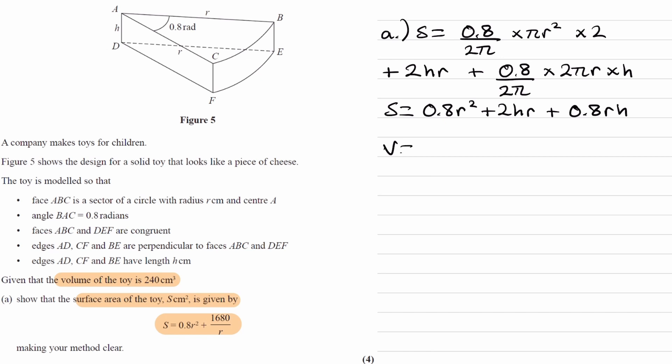So we know the volume of the toy is equal to 240. We can get an expression for the volume of the toy from the diagram. We would do the area of the sector multiplied by height. Area of the sector would be, we've worked this out before, it's just this over here. Fraction of the circle that we have multiplied by the area. So 0.8 over 2π times πr². And then multiply that by the height of the shape.